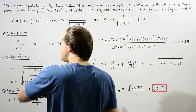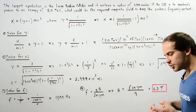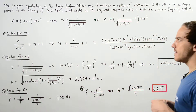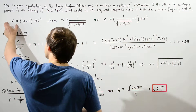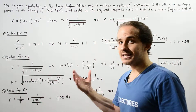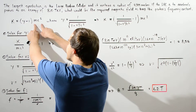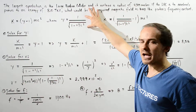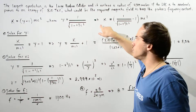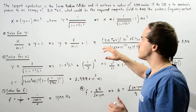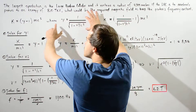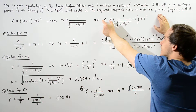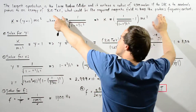Let's begin by recalling the relativistic kinetic energy of a particle moving at a very high velocity V. The relativistic kinetic energy is given by the rest mass energy MC squared multiplied by (gamma minus 1), where gamma equals 1 divided by the square root of (1 minus V squared divided by C squared). Substituting gamma in gives us the full relativistic kinetic energy equation.